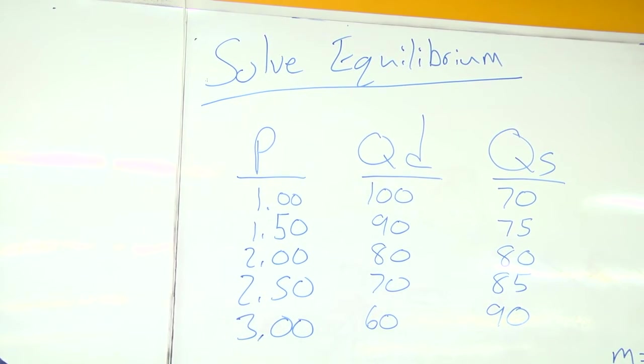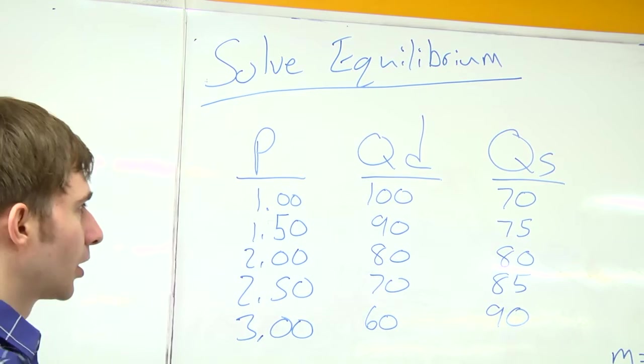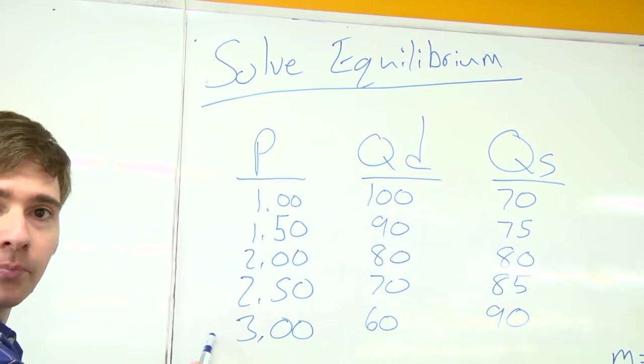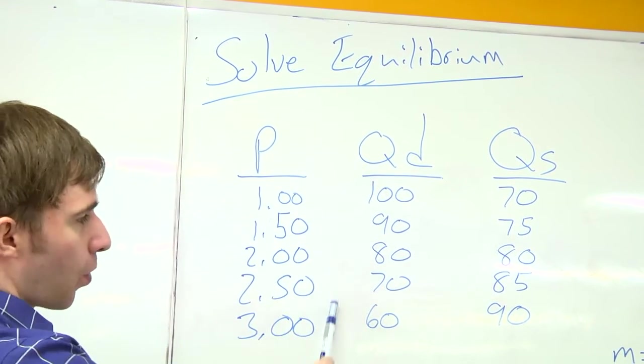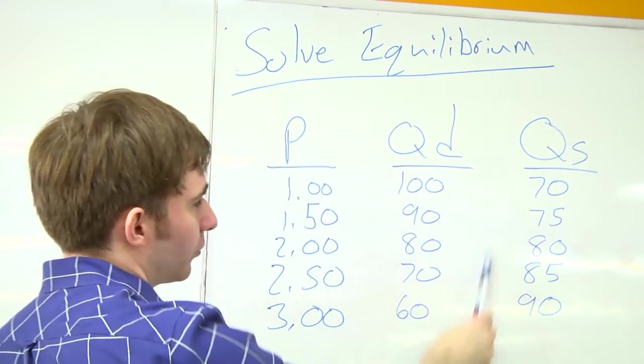So we're going to solve equilibrium first. Here we have our different prices, our different quantity demands, and our different quantities supplied.